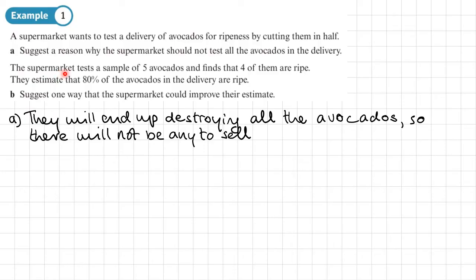It says here the supermarket tests a sample of five avocados and finds that four of them are ripe. They estimate that 80% of the avocados in the delivery are ripe. Part B suggests one way that the supermarket could improve their estimate.